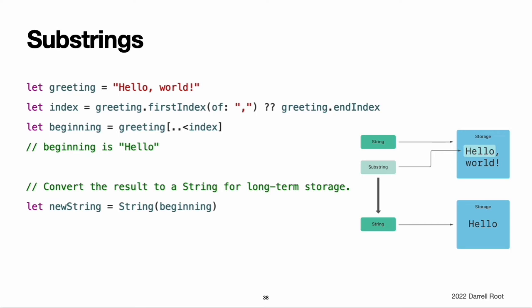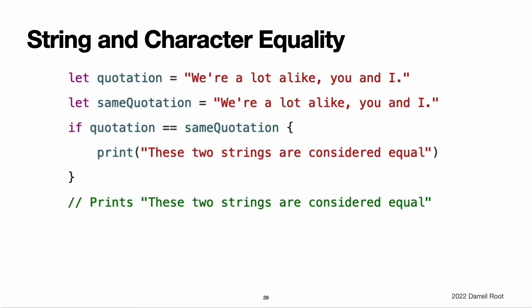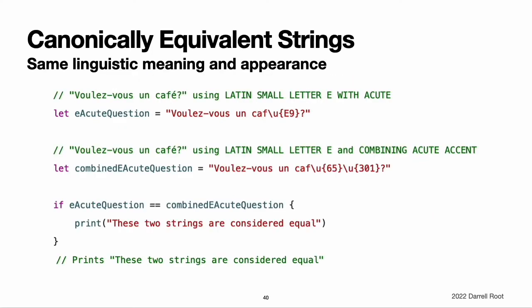Comparing strings. Swift provides three ways to compare textual values: string and character equality, prefix equality, and suffix equality. String and character equality is checked with the equal-to operator (==) and the not-equal-to operator (!=), as described in comparison operators. Two string values, or two character values, are considered equal if their extended grapheme clusters are canonically equivalent. Extended grapheme clusters are canonically equivalent if they have the same linguistic meaning and appearance, even if they are composed from different Unicode scalars behind the scenes. For example, Latin small character E with acute is canonically equivalent to Latin small letter E followed by combining acute accent. Both of these extended grapheme clusters are valid ways to represent the character E with accent, and so they are considered to be canonically equivalent.